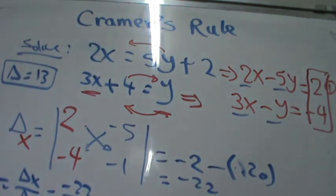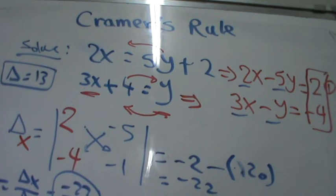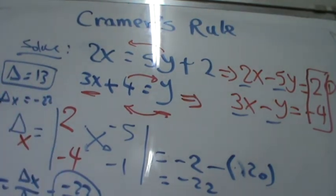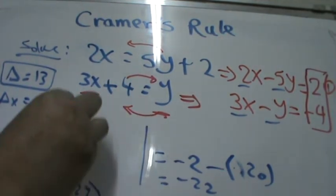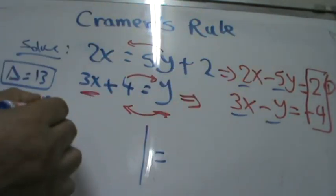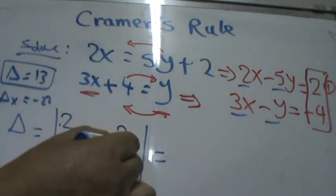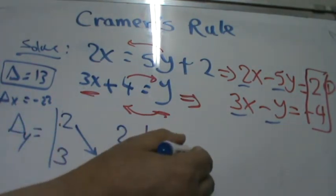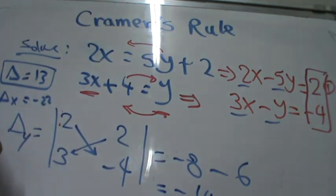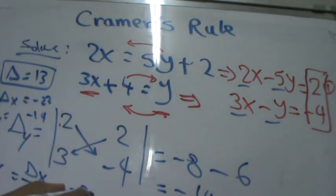By the same way, replace the column for y with the constants to get delta sub y. Evaluate: 2 times negative 4 equals negative 8, minus 2 times 3 equals 6. Negative 8 minus 6 equals negative 14. So delta sub y equals negative 14. Therefore y equals delta sub y over delta, which equals negative 14 over 13.